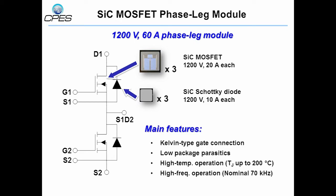The main features of this module include the Kelvin-type gate connection to minimize the common source inductances, low-package parasitic impedances, high-temperature operation with the device's maximum junction temperature pushed up to 200 degrees Celsius, and high-frequency operation with a nominal switching frequency of 70 kHz.